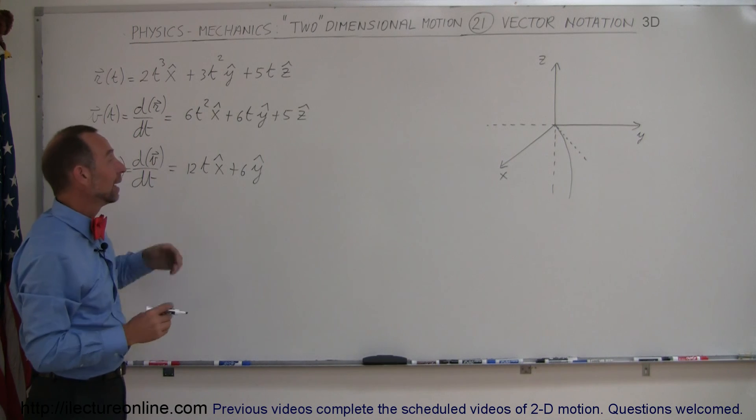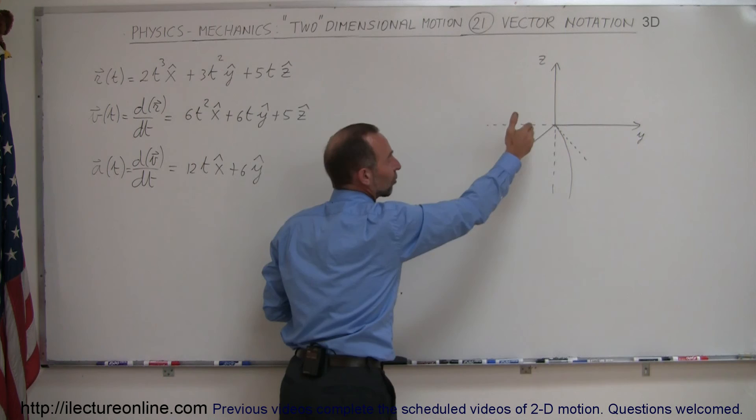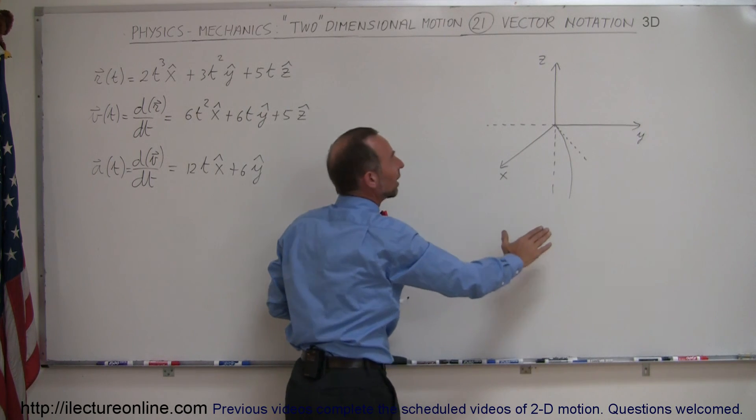In the x direction there's acceleration that is increasing with time. You can see that in the x direction the object will go faster and faster, not as fast in the y direction, and in the z direction it would be constant speed going up.